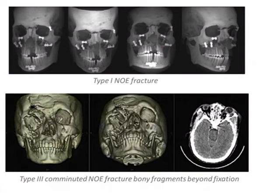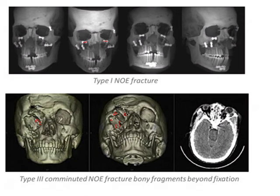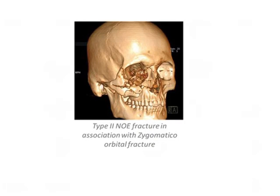In a Type 1 NOE fracture, you can see it is basically a single plate involved — this is all the maxilla, but a single plate. In Type 3, you can see multiple fractures and multiple fragments of bone everywhere, with the canthal ligament displaced. In Type 2, there are again multiple fragments of bone, however the medial canthal ligament is probably still attached to its origin and not involved in the fracture.